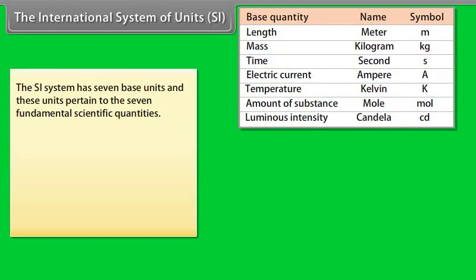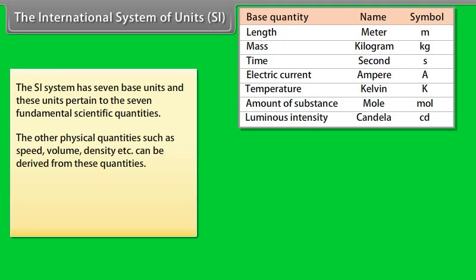The SI system has seven base units and these units pertain to the seven fundamental scientific quantities. The other physical quantities such as speed, volume, density, etc., can be derived from these quantities.